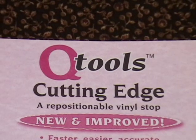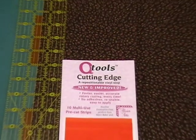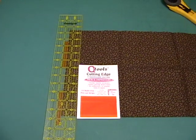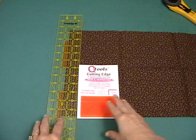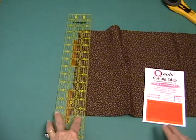QTools cutting edge is a vinyl stop that you can place on the underside of your ruler to create a stop so that whenever you're rotary cutting you can make consistent accurate cuts. Notice how having this on the underside of my ruler catches the edge of my fabric.